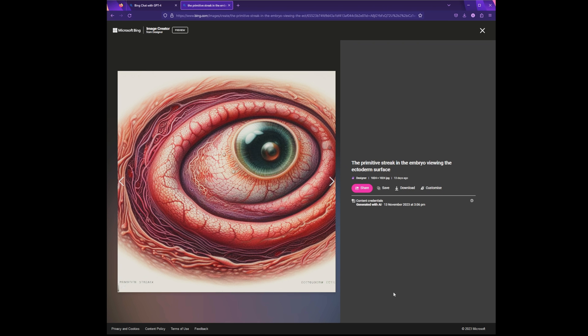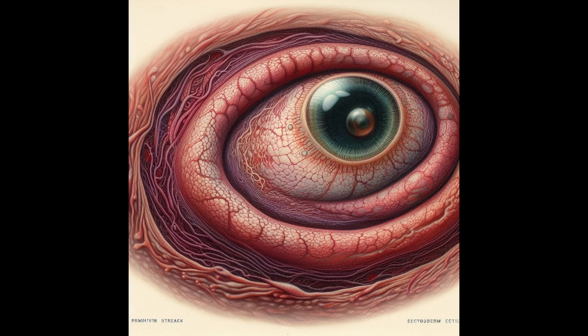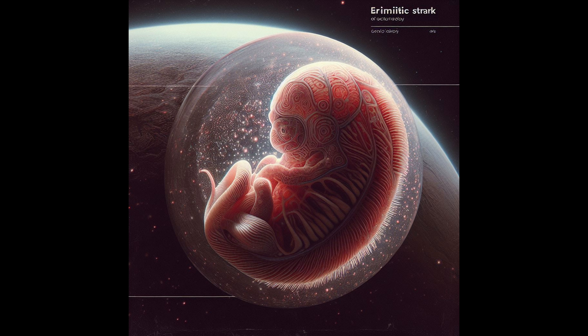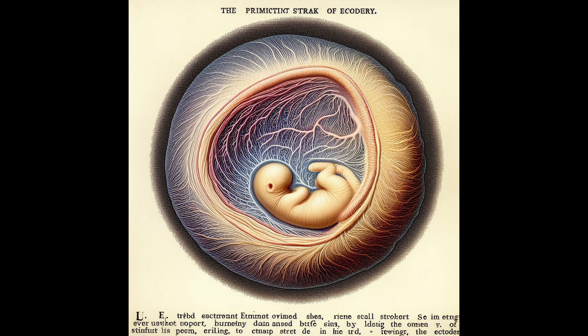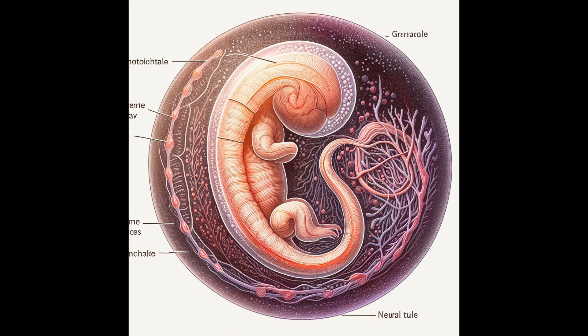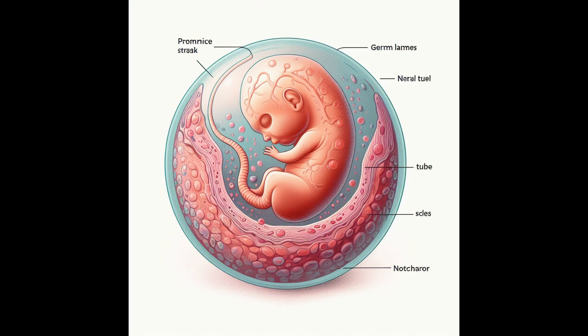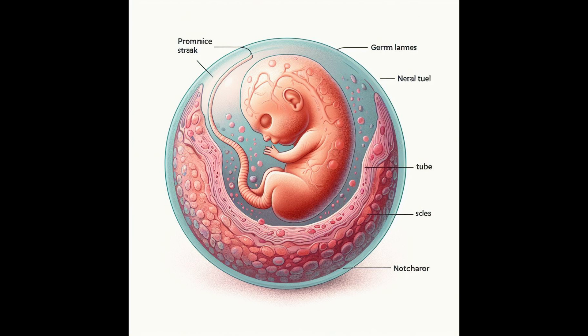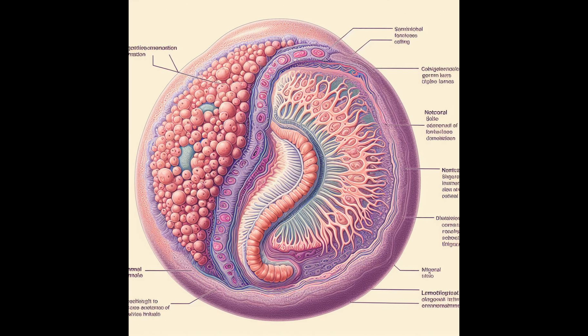The primitive streak in the embryo, viewing the ectoderm surface — because that's where the primitive streak is. You couldn't mix that up for anything else, could you? And it generated these amazing, terrifying, often slightly horrific illustrations. I asked it to draw me an illustration of the primitive streak and got this. The primitive streak is a super early event in the embryo's development — the embryo's just a flat oval of cells, and the primitive streak is the groove we see in the midline as that single sheet becomes three sheets. Not this mad complexity. And look at these labels — it's like it knows an illustration should have labels, but it's made up its own language, like it's got a bit of elvish in there or something.